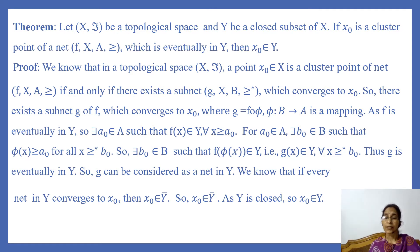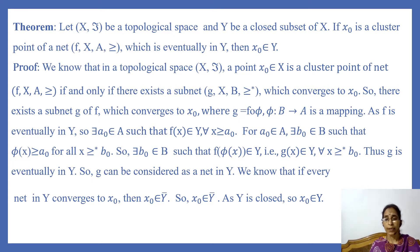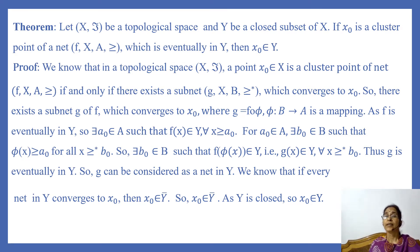Since f is eventually in Y, there exists some a₀ in A such that f(x) belongs to Y for all x ≥ a₀. Since g is a subnet of f, for the point a₀ in A there exists a point b₀ in B such that φ(x) ≥ a₀ for all x ≥* b₀. Therefore f(φ(x)) belongs to Y, meaning g(x) belongs to Y for all x ≥* b₀.